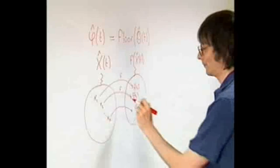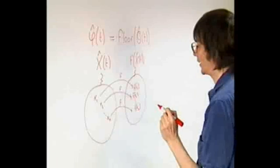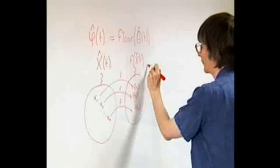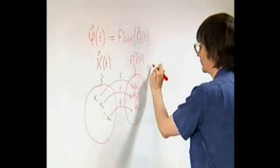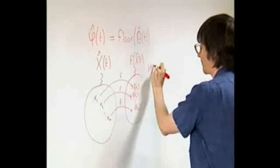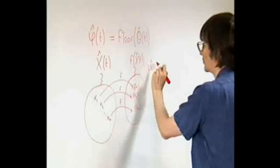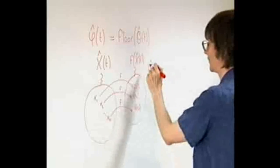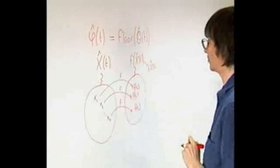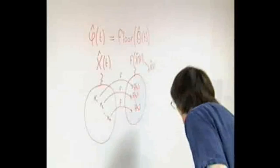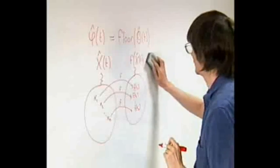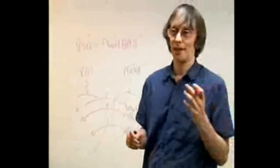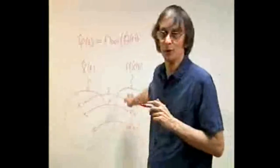For example, we can multiply x by a real number, say lambda, and get another observable, lambda x, whose spectrum consists of lambda times elements in the spectrum of x. Okay, this is the spectrum of f of x.